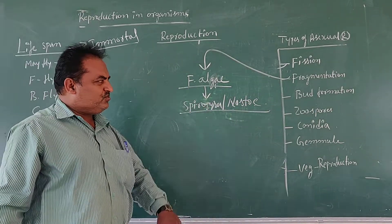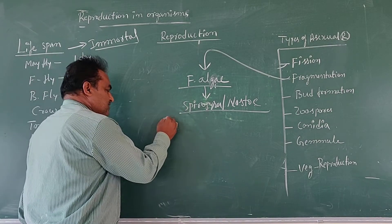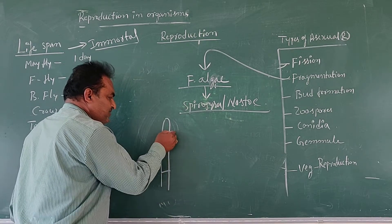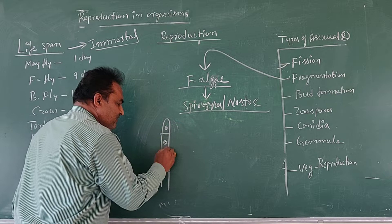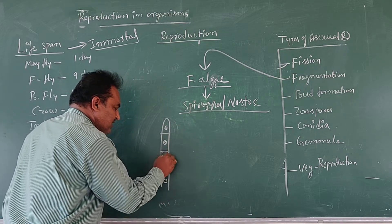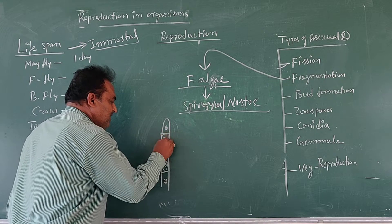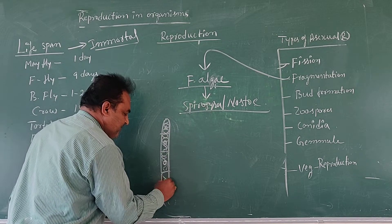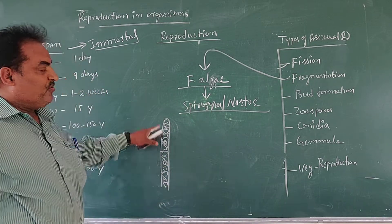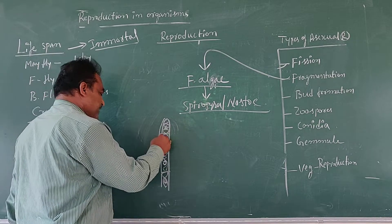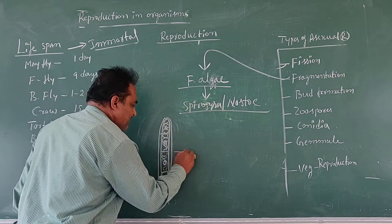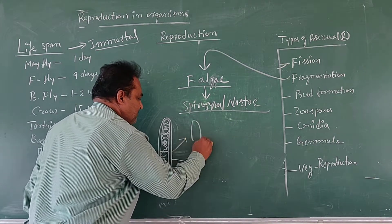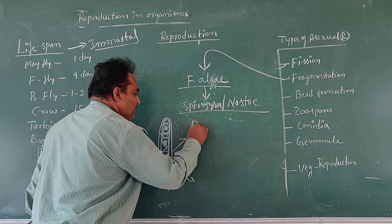During its asexual type of reproduction, Spirogyra is a filamentous alga. It creates a number of cells inside, with the presence of nucleus and cell organelles. One of the cell organelles is called a chloroplast. The chloroplast is in the form of a spiral, therefore the name is called Spirogyra. During its reproduction, the filament splits into a number of pieces.